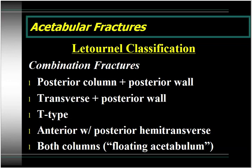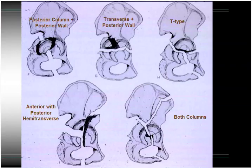The simple posterior wall fracture is the most common type overall. The T-type fracture is the dreaded one associated with the worst results. The anterior with the posterior hemitransverse — you can think of that fracture as really a transverse with an anterior wall. And then the both-columns fracture, the very interesting floating acetabular injury.